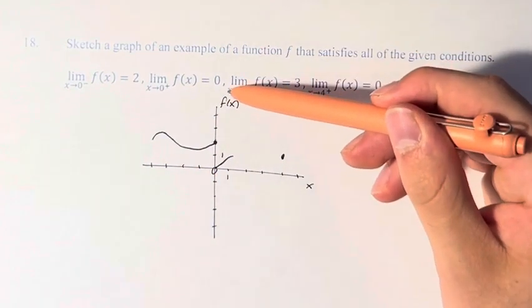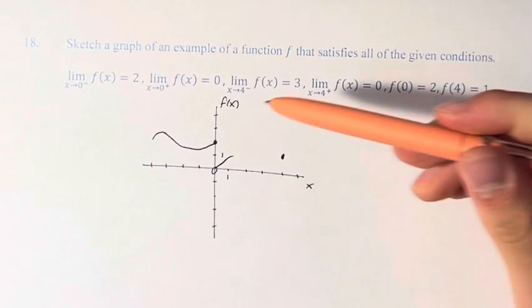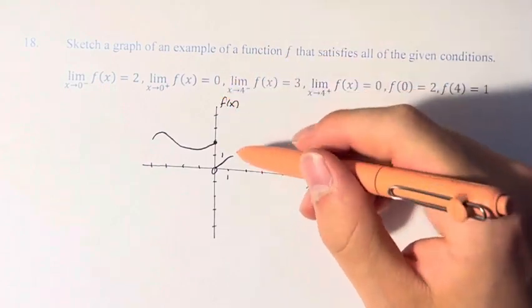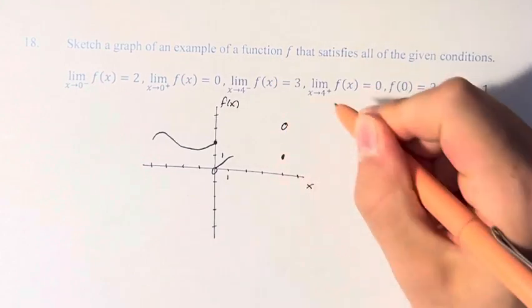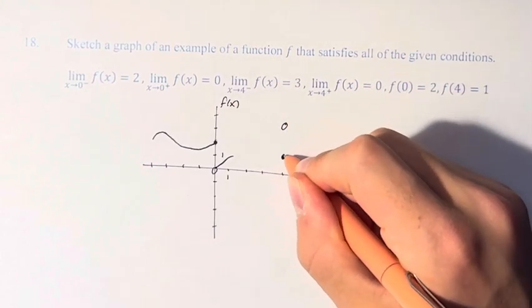Next up, we have the limit as x approaches 4 from the left. That's equal to 3. So x is equal to 4, 3. Again, there's an open circle because the function is actually equal to 1 way down here.